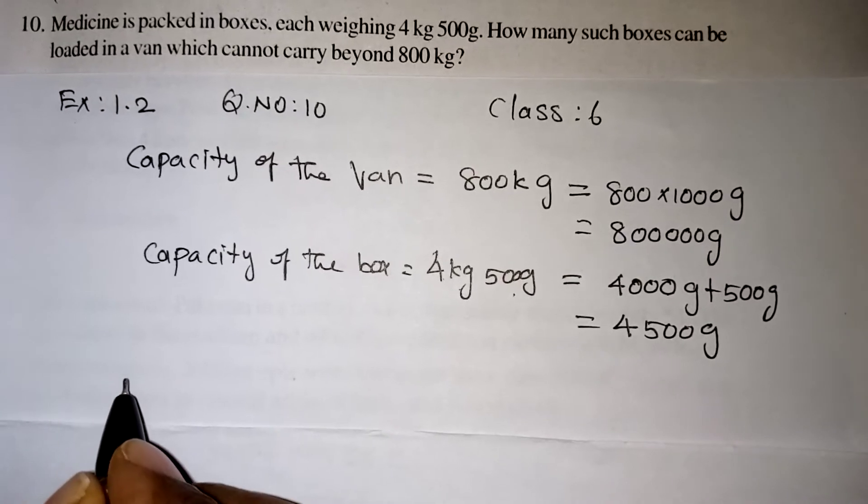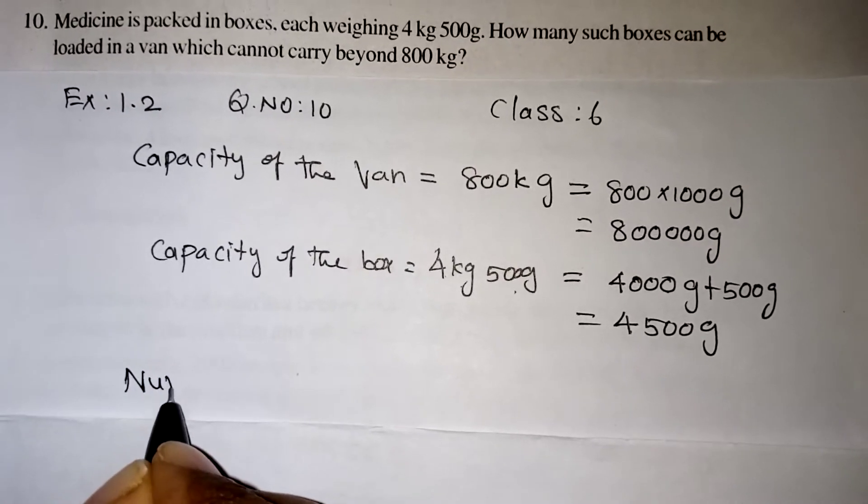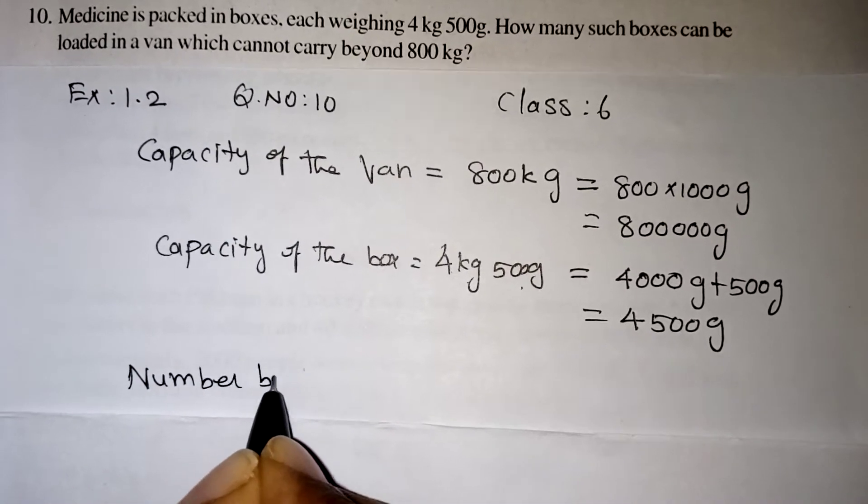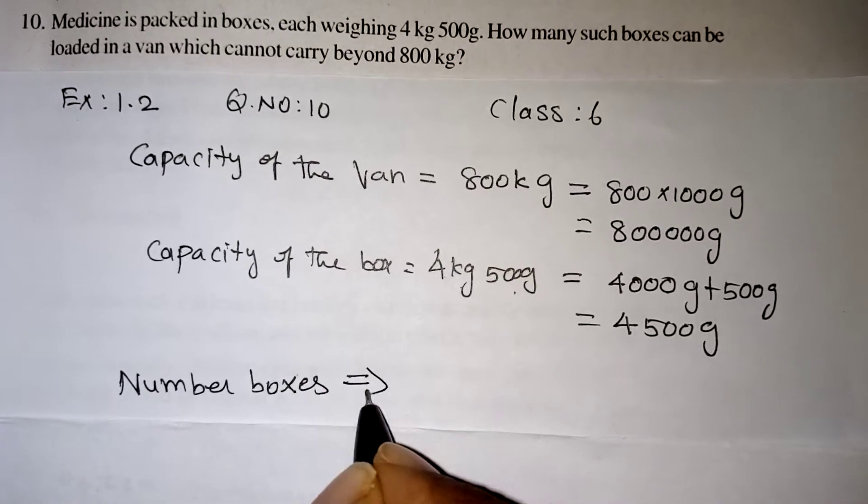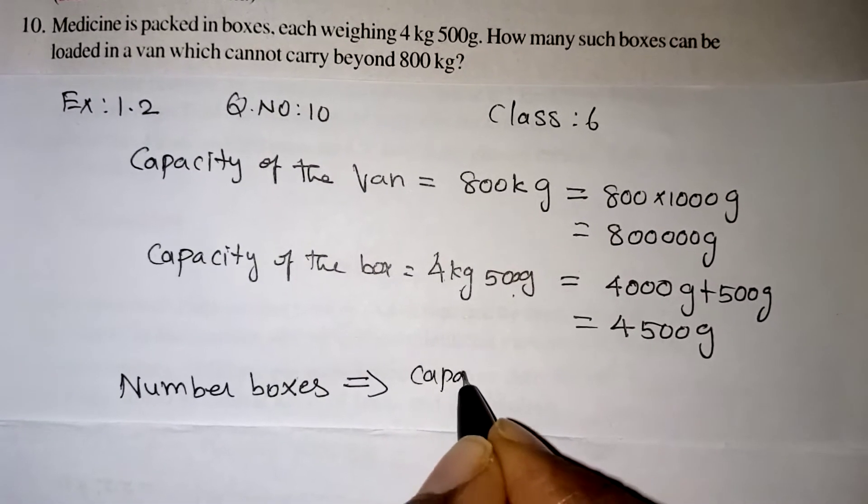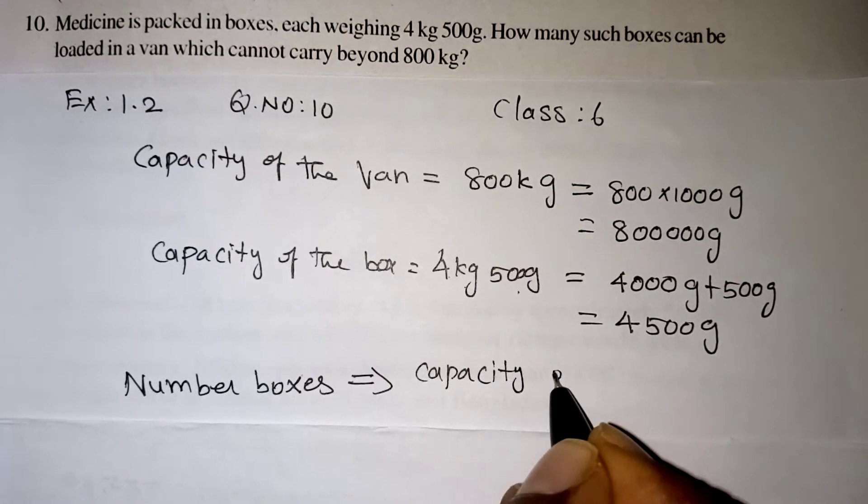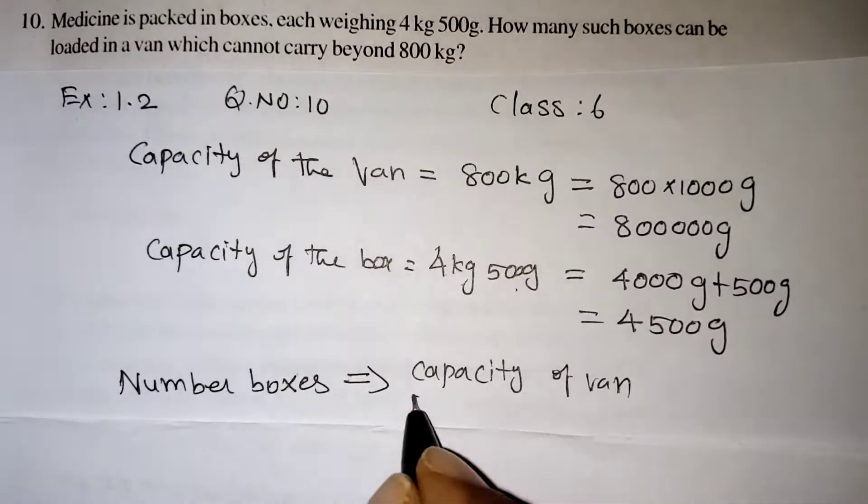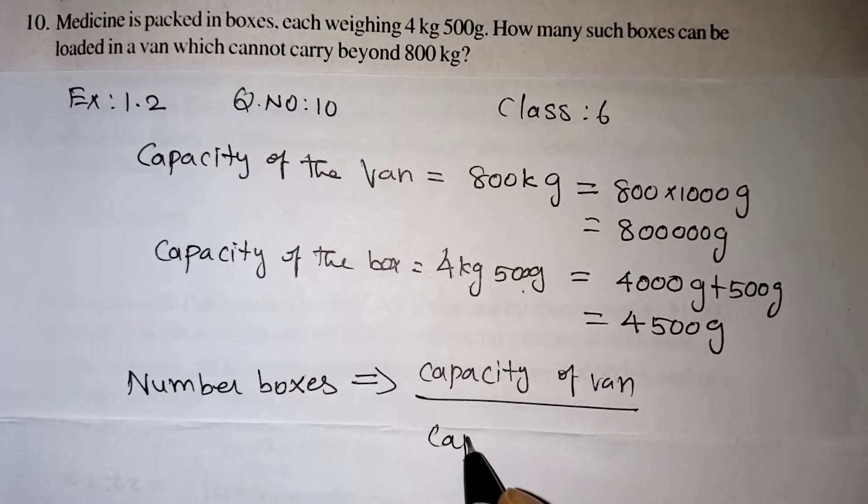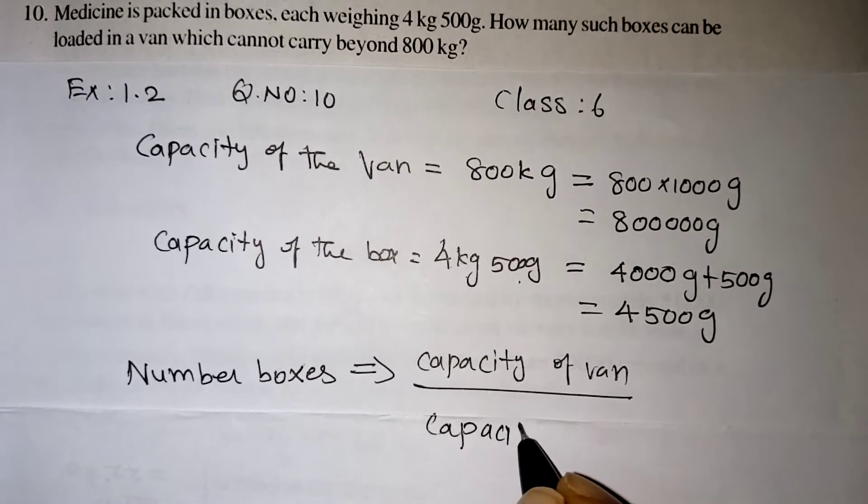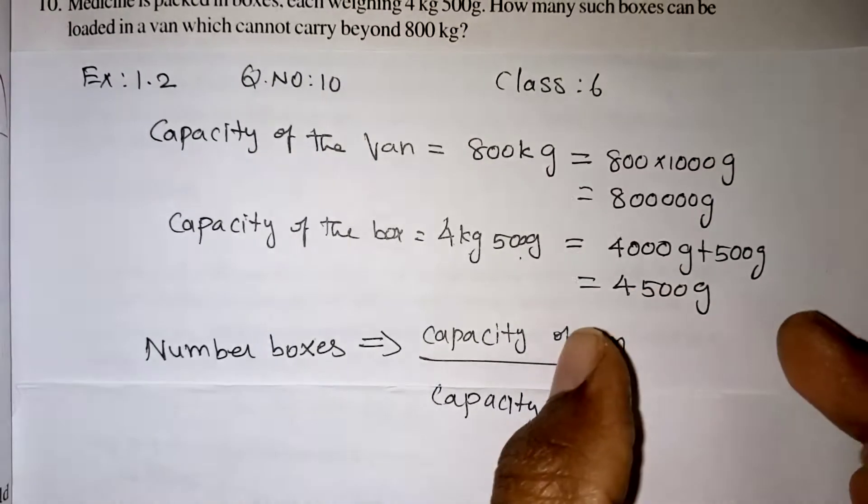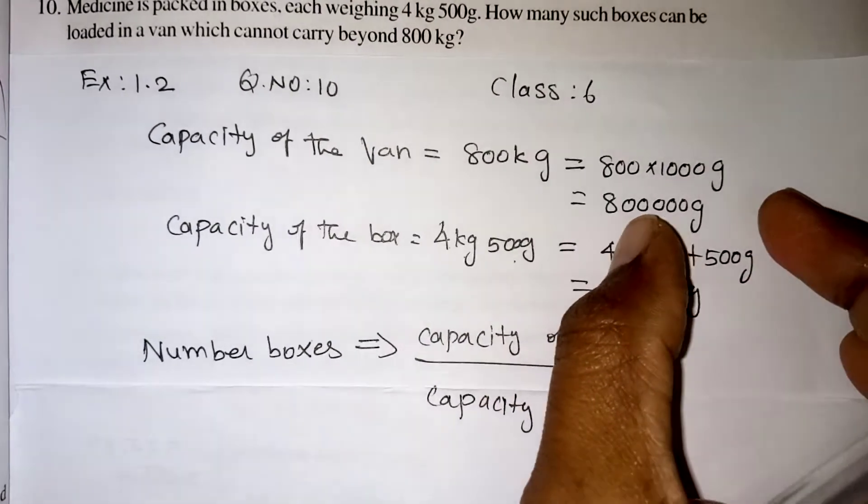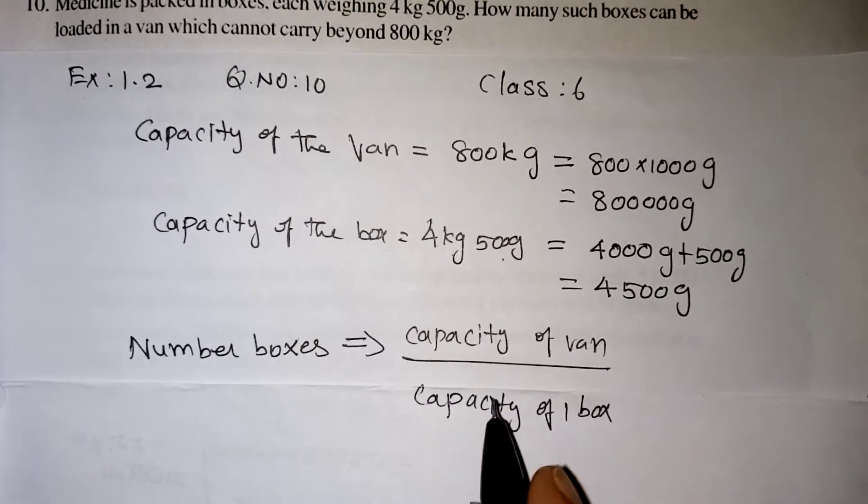Number of boxes that can be filled in the van will be capacity of the van divided by capacity of the medicine box. How many times 4500 is available in that van we need to find out. That's why we are dividing here.